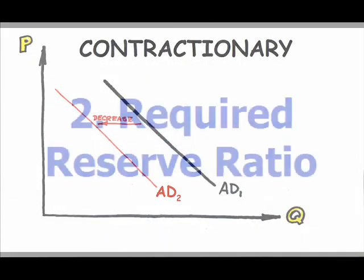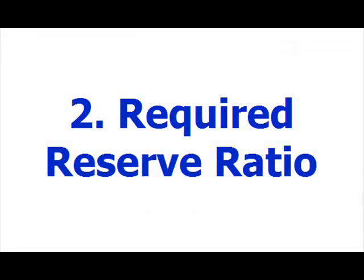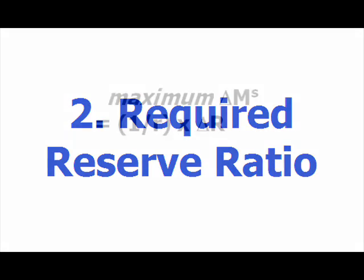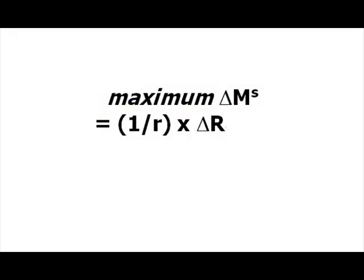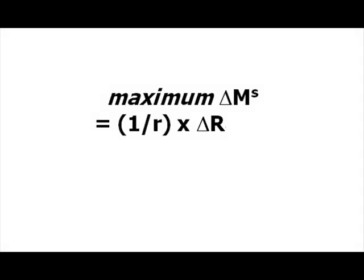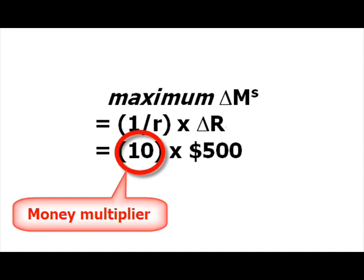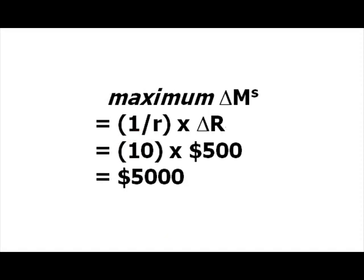What about the second tool, the required reserve ratio? The maximum change in checkable deposits, and therefore the money supply, is 1 over the required reserve ratio times the initial change in reserves. For example, if the change in reserves is $500 and the required reserve ratio — that is, the percentage of total deposits that the bank is legally required to hold onto — is 10%, then the maximum change in the money supply is 1 over 0.1 times 500, or 10 (the money multiplier) times 500, or $5,000.